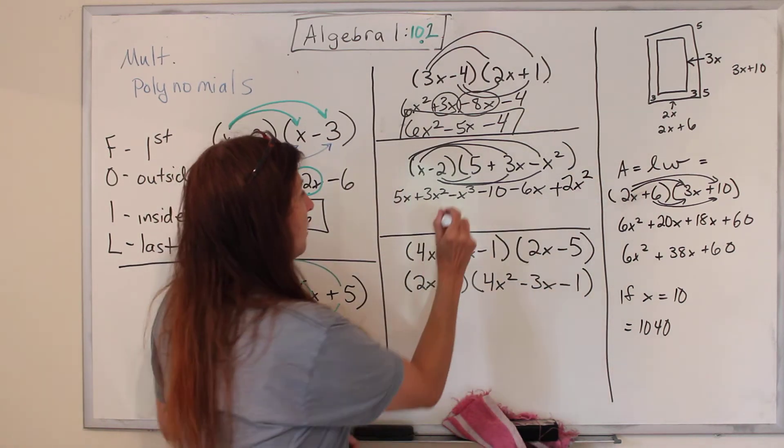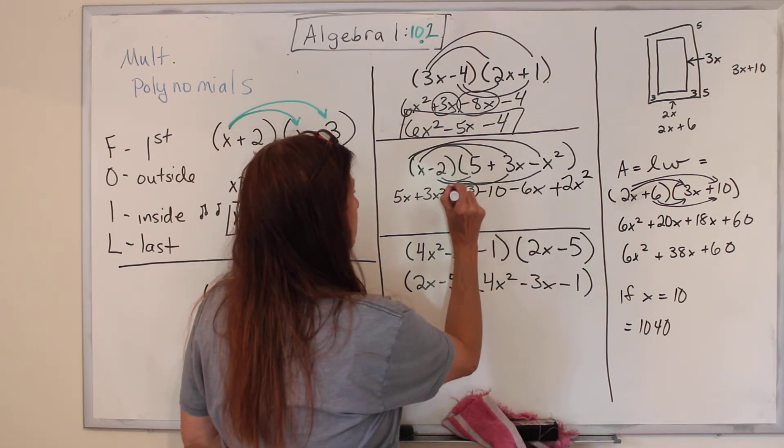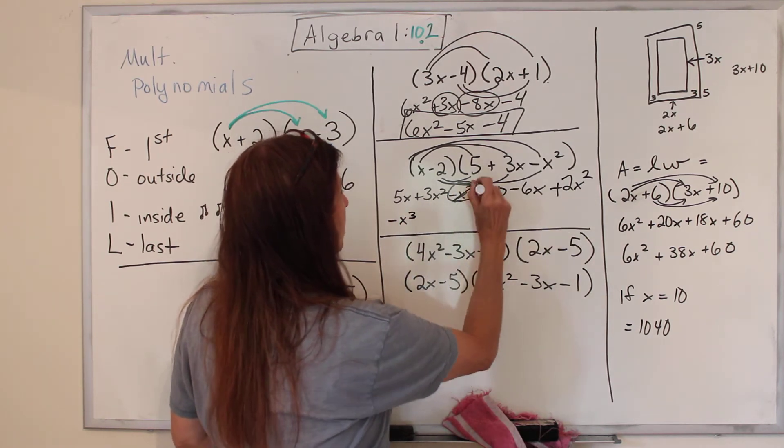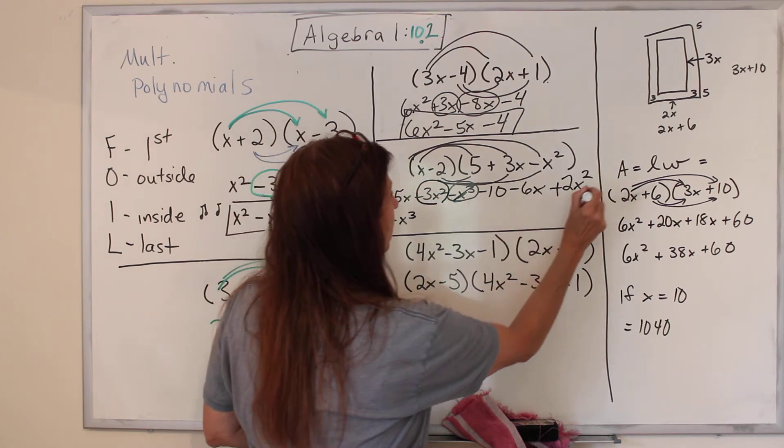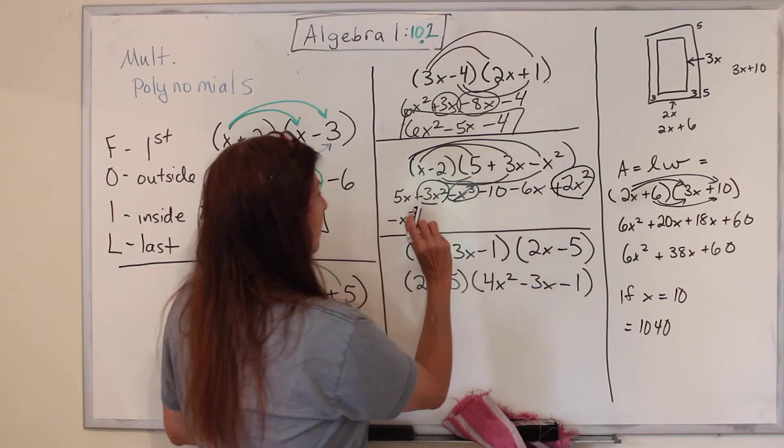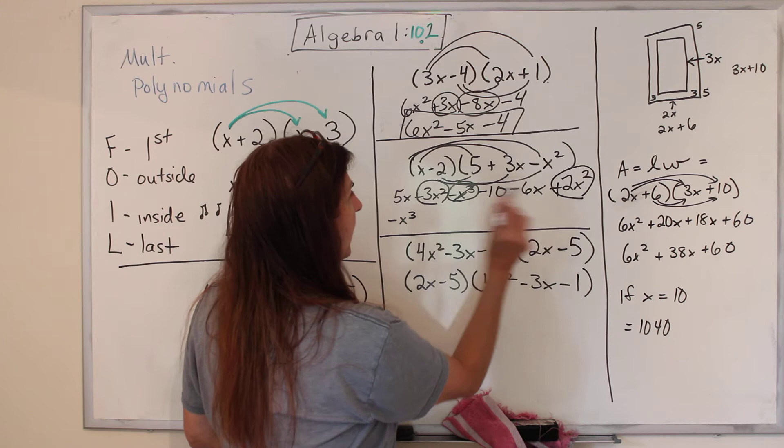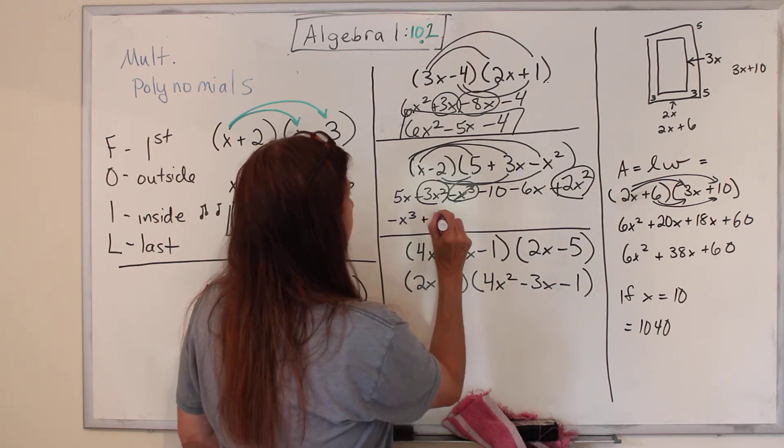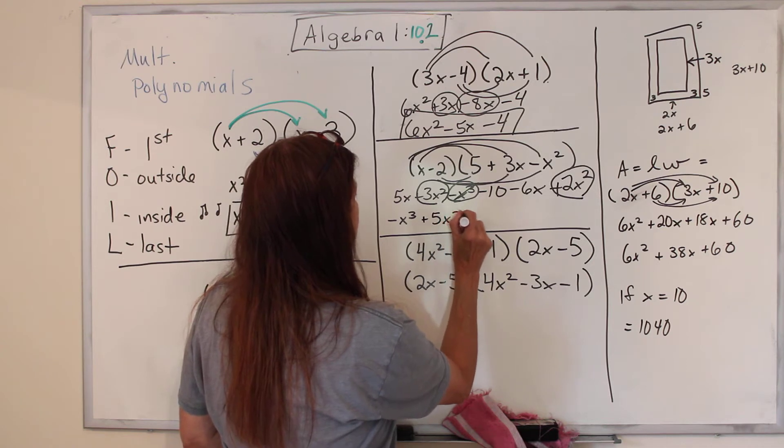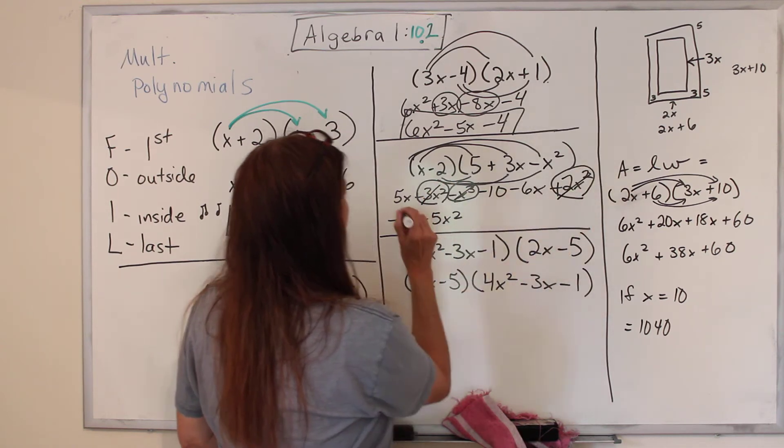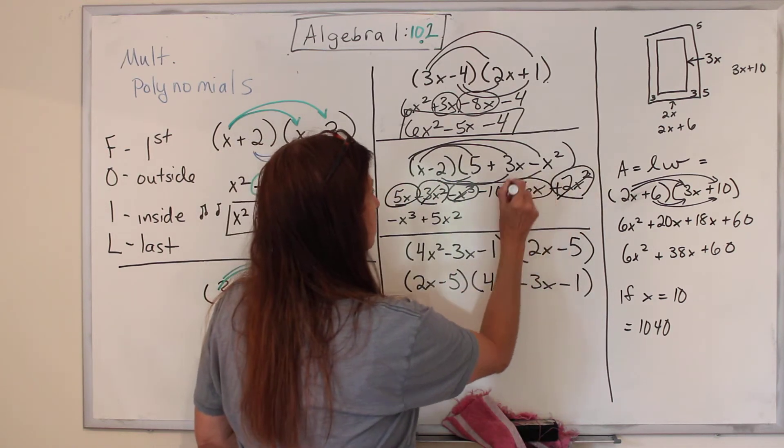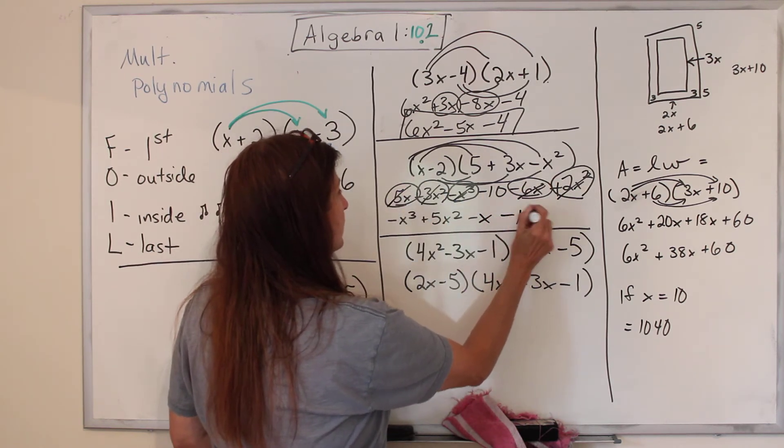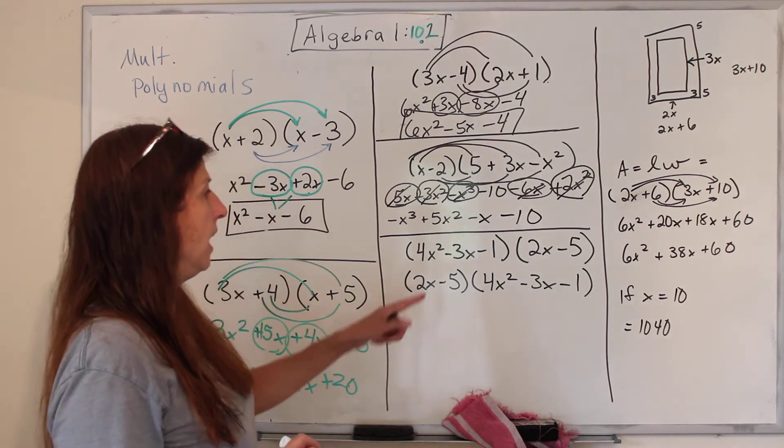Now we gather up our terms. Our biggest one is this one. So we start with negative x cubed, and it's the only one. Mark it out. Then come the squares, and we have positive 3x squared plus 2x squared is 5x squared. Now we do the x's. 5x minus 6x is negative x. And now the bare number, minus 10. Ta-da!